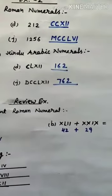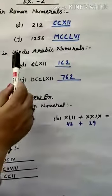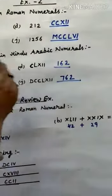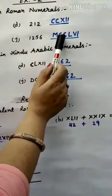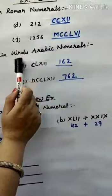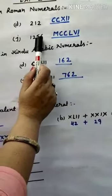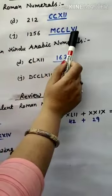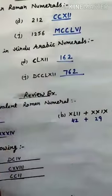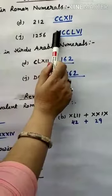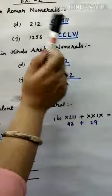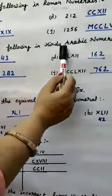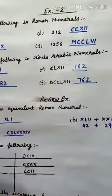For 1256: M is used for 1000, CC for 200, L for 50, and VI for 6. So 1256 is written as MCCLVI.